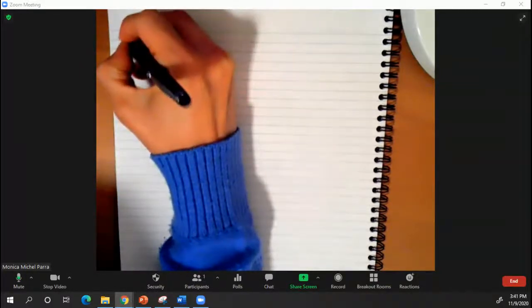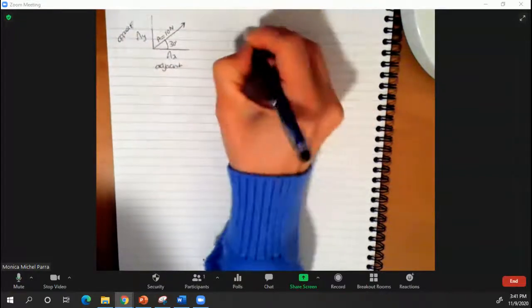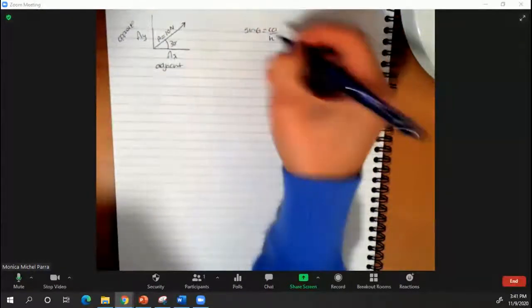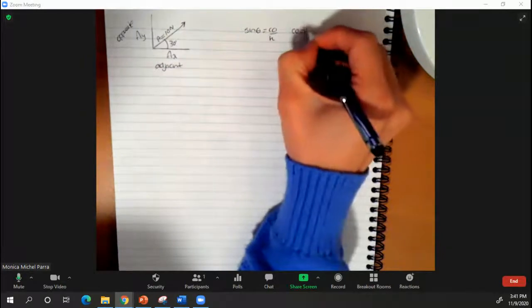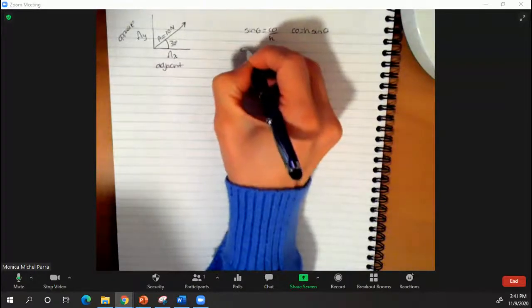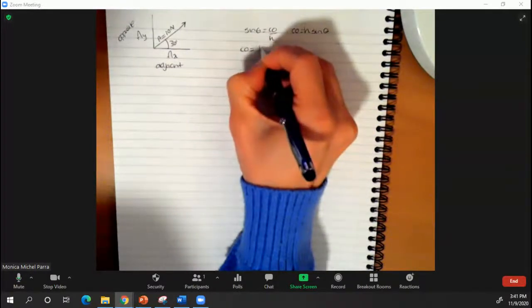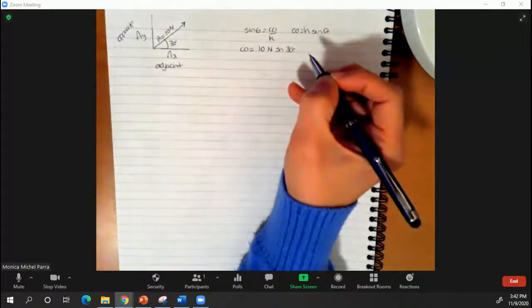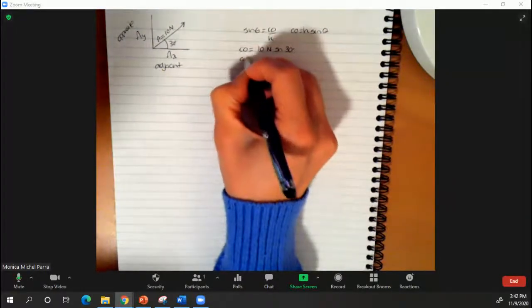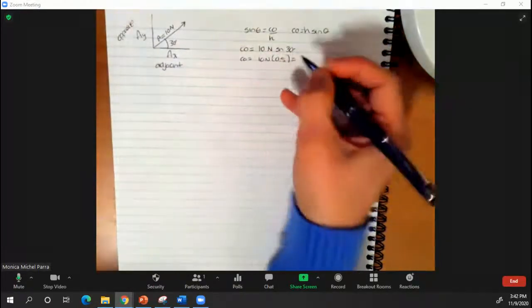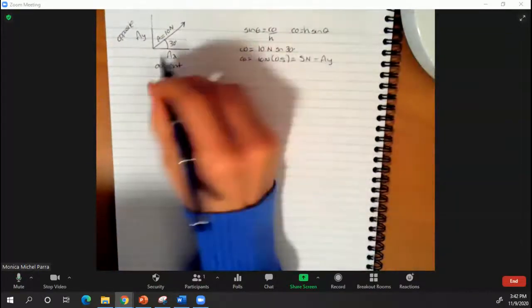The opposite side is going to be Ay. Remembering that the formula for sine is opposite over hypotenuse, to calculate the opposite side I'm going to multiply the hypotenuse times the sine of the angle. This brings us to having the opposite side be 10, which is the hypotenuse, multiplied by the sine of 30 degrees. This equals 10 multiplied by 0.5, giving us an answer of 5 newtons for Ay.